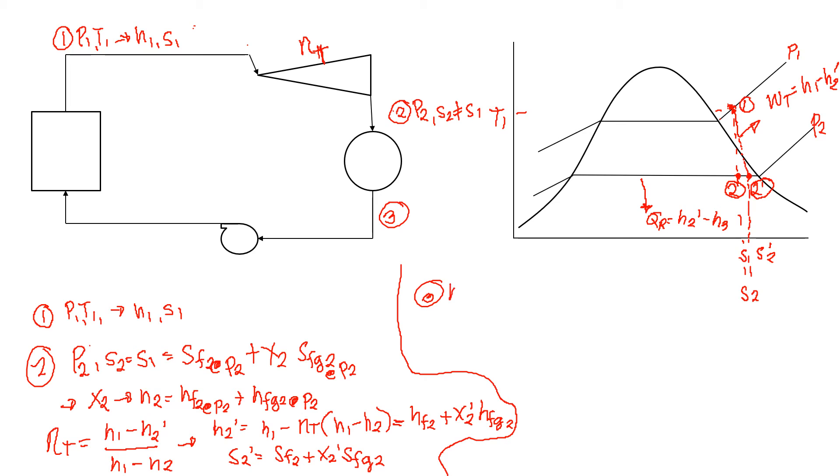P3 is equal to P2 because still an isobaric process. Pressure 3 is equal to P2. However, your H3 is equal to Hf2 at pressure 2. This is your point 3. Remember, we are now at actual process and hence, H2 prime minus H3 is the heat rejection. In this process, because it is actual, we have H2 prime minus H3.